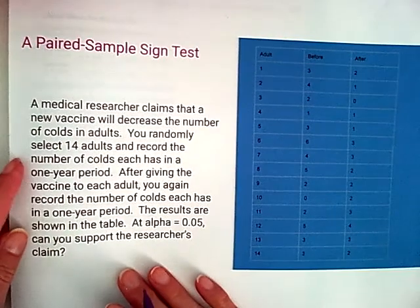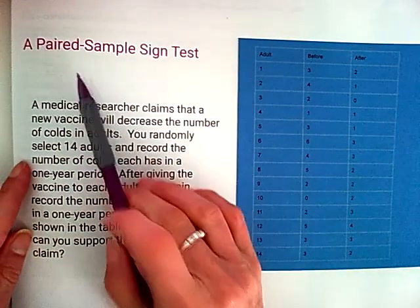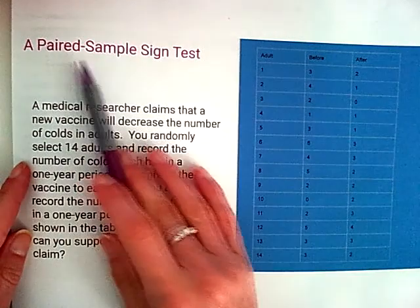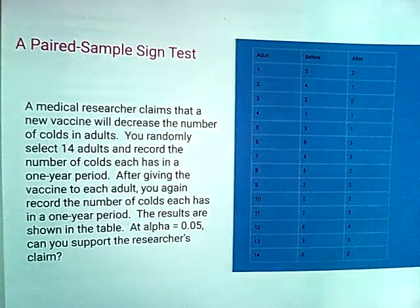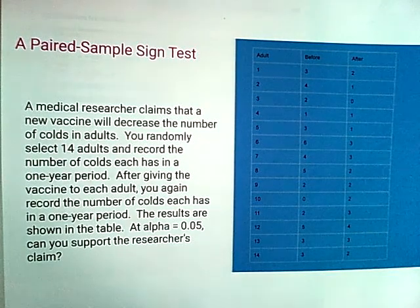So for our last example for this lesson, we're going to look at data that is paired. So this is dependent data, data that we're looking at a before or after picture that pairs together.